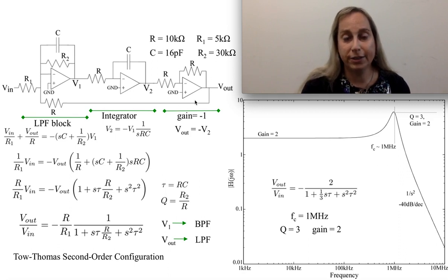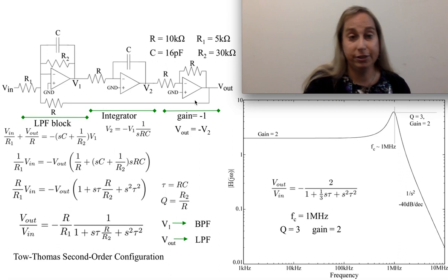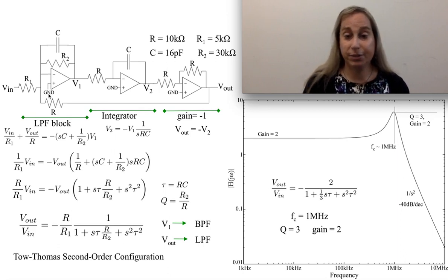And then I see another block that's just giving me a gain of minus one. And the gain of minus one is just simply to invert the sign, because I'm going to need to do a sign inversion. But it's basically a low-pass filter, integrator, and then a sign inversion, and then I build that into feedback. And as a result, I can get second-order dynamics out of this particular structure.